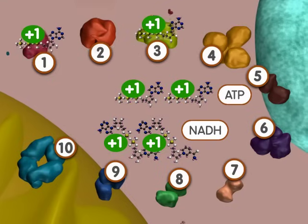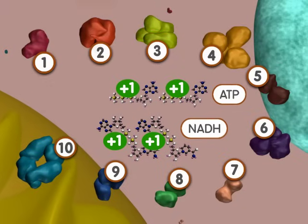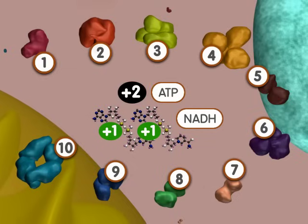Because two ATPs were spent in the early steps of the pathway, glycolysis results in a net of two ATPs.